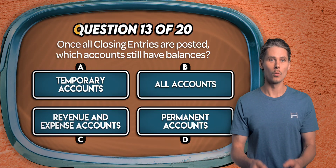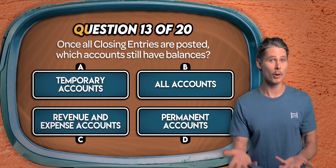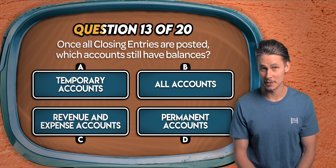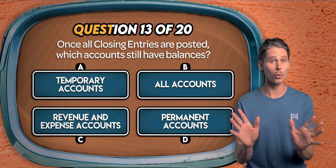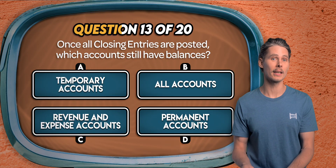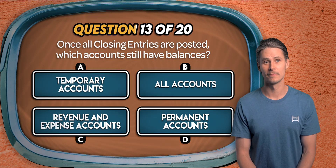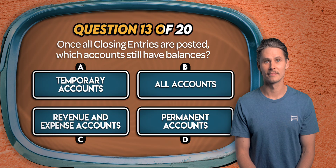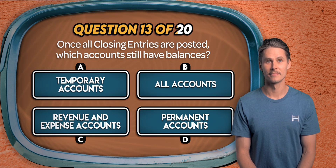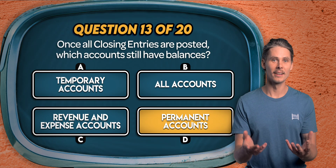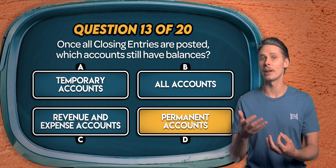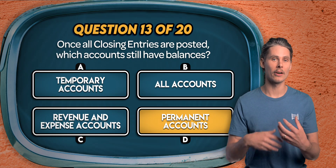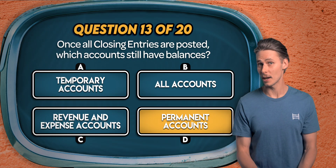Question 13. Once all closing entries have been posted, which accounts still have balances? Is it temporary accounts, all accounts, revenue and expense accounts, or permanent accounts? It's D. Closing entries reset temporary accounts to zero. Only permanent accounts carry their balances forward to the next accounting period.